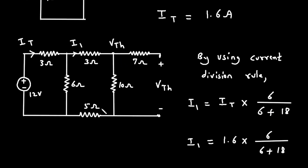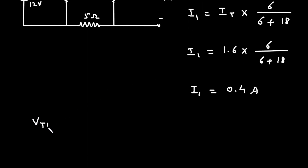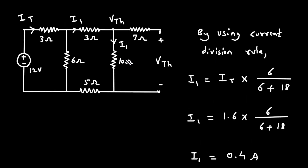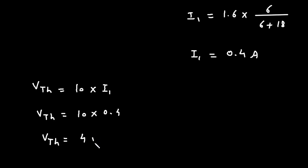Now we can easily find the value of VTH. VTH is the voltage across this 10 Ohm resistor, and the current through it is I1. So VTH = 10 into I1 = 10 into 0.4, therefore VTH = 4V. Now we have the values of both VTH and RTH.